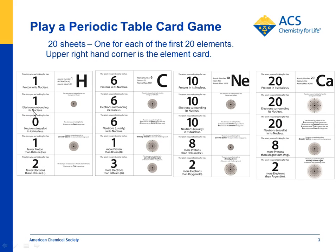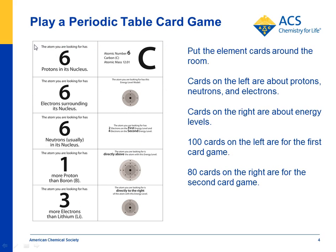The game the kids play is based on 20 sheets that we supply in the lesson. The sheets are 8.5 by 11, and in the upper right-hand corner there's what we call an element card. So each sheet is about a different element — hydrogen, carbon, neon, calcium, and so on. The cards on the left are used in one game about protons, neutrons, and electrons, and the cards on the right are used in another game about energy levels. If you laminate each of the 20 sheets and cut out five cards per sheet, there are 100 total cards. For the other game, you cut out four cards per sheet, giving you 80 cards.